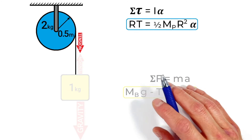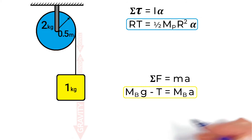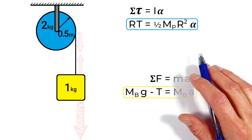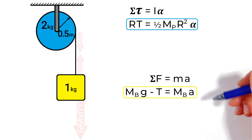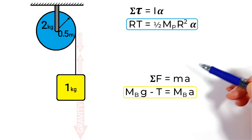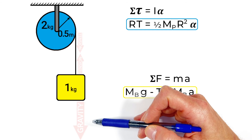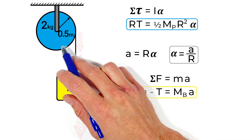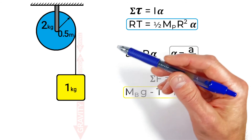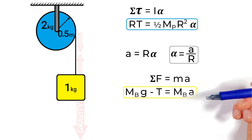We now have a second equation, but it introduces two unknowns: tension and angular acceleration. Combined with the block equation, we have three unknowns total, so we need a third equation. We can relate the rotational acceleration of the pulley to the linear acceleration of the block using a equals r times alpha, where r is the radius of the pulley and alpha is its angular acceleration. With three equations and three unknowns, everything from here is just algebra.